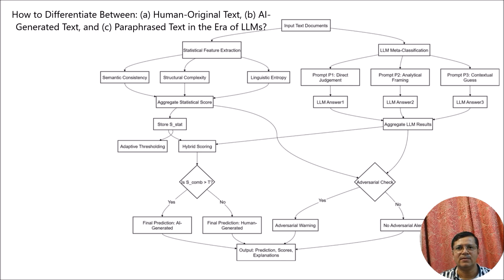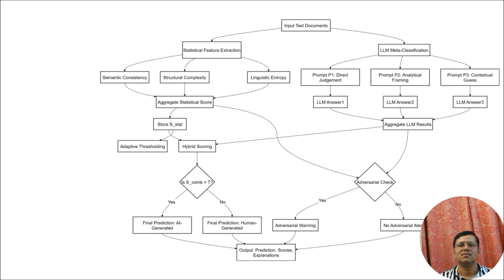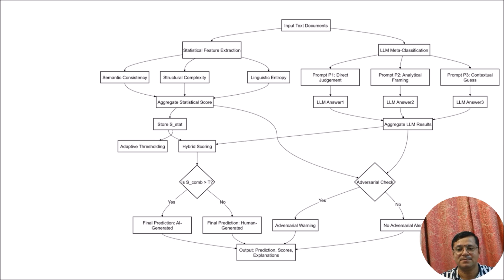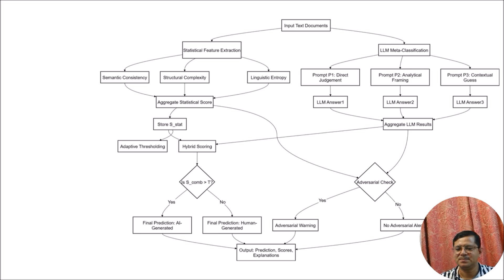I faced a lot of issues due to this, so I decided to go through some initial demonstrations on how we can capture whether the text is: first, fully human-generated; second, generated by large language models or artificial intelligence; or third, generated by AI but with a lot of paraphrasing applied on top so that it looks like human-original text.